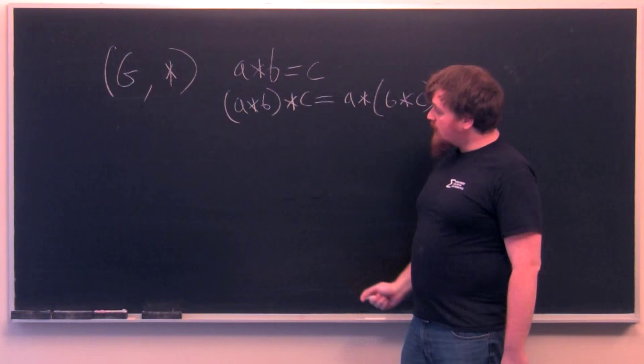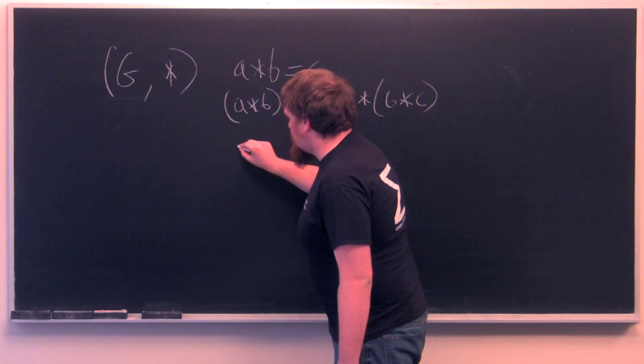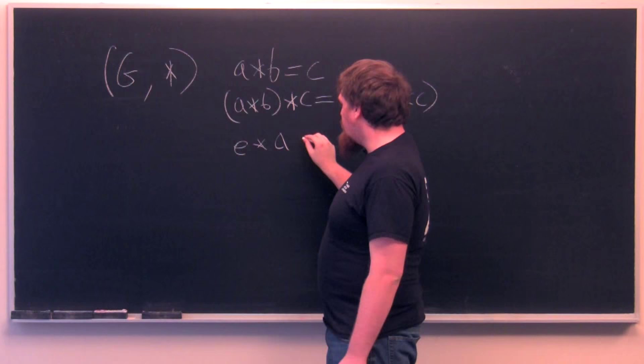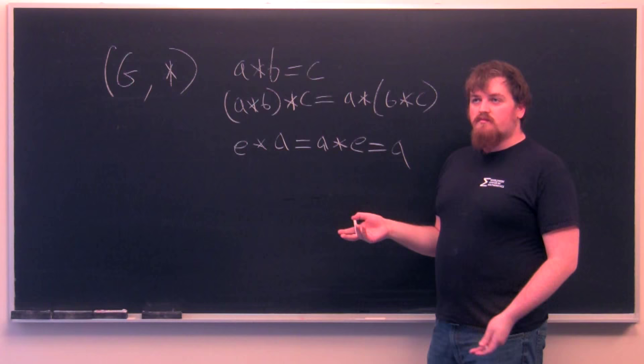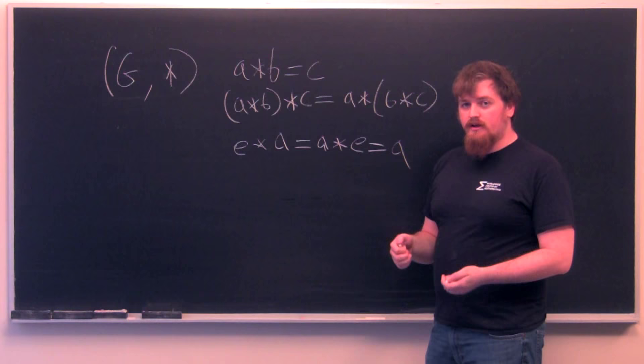Thirdly, there needs to be an identity element e in the group G, such that e times a equals a times e equals a. This is, in terms of multiplication or addition, like zero in addition or like one in multiplication.